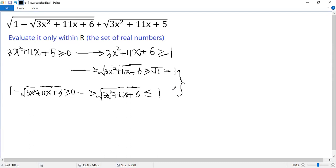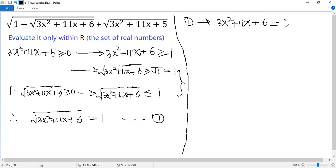Combine these two inequalities. The only possibility would be equal, so we get √(3x² + 11x + 6) = 1.